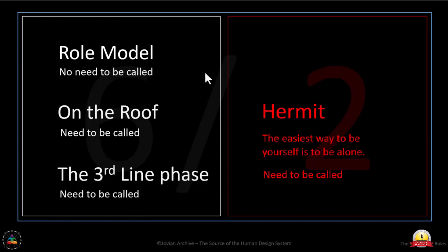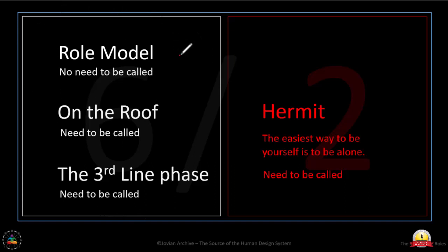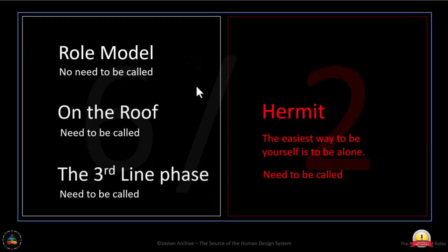Waiting for the call. Role model 6-2: no need to be called — they're on the roof. There is this need to be called, and in this third-line phase, there is this need to be called. The true authentic self of the role model: no need to be called. The six — just being, in its evolutionary process. If you're a 6-2, the call is everything.